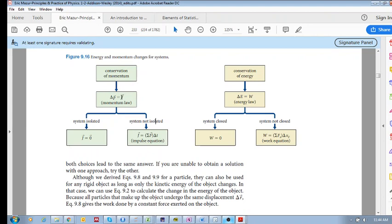However, if there's an external force or external momentum transfer across the boundary, then we have an impulse. J is equal to delta P. So this is the most general momentum law. But if the system is isolated, then J is zero.